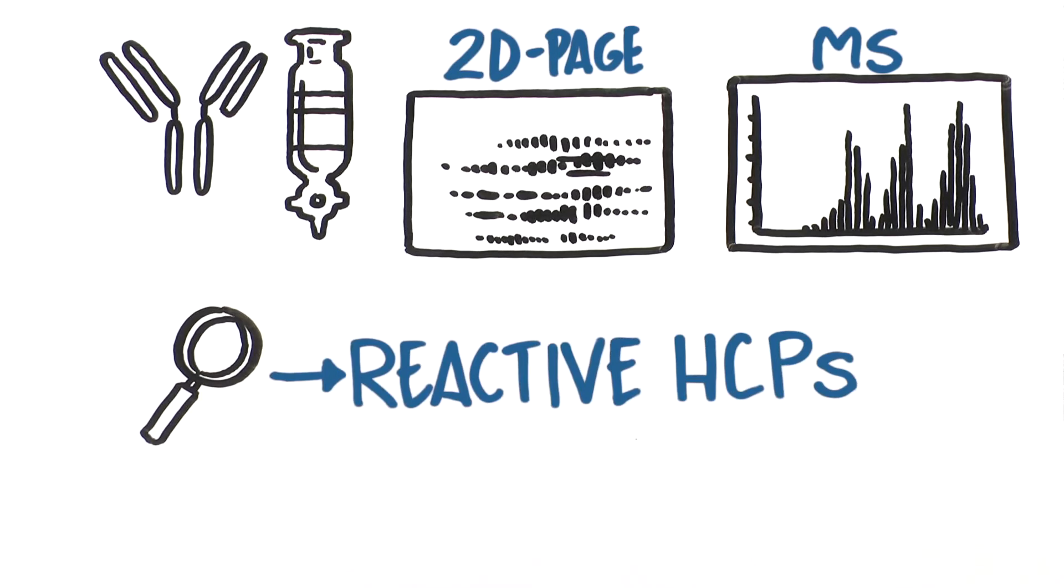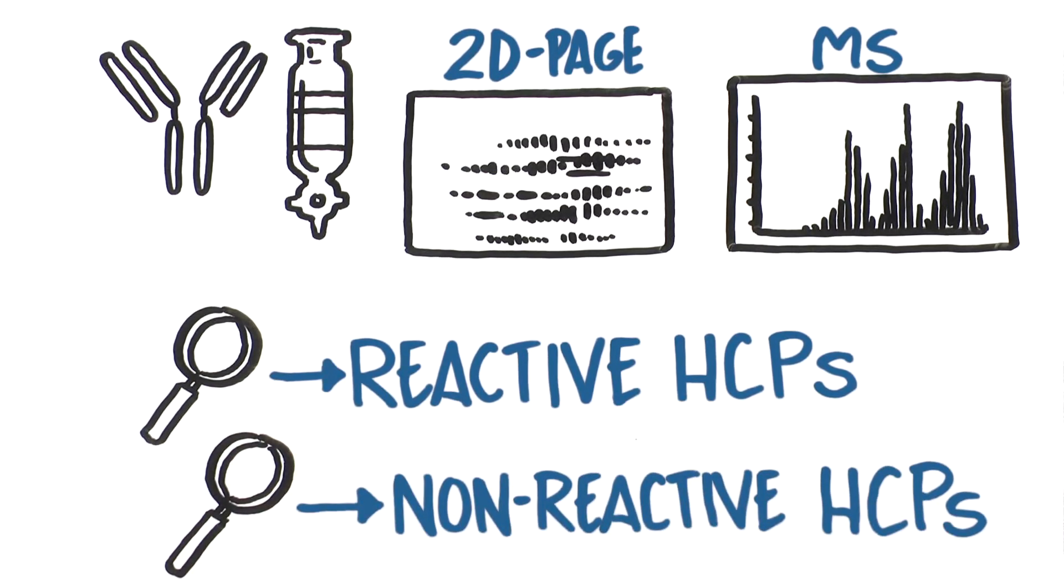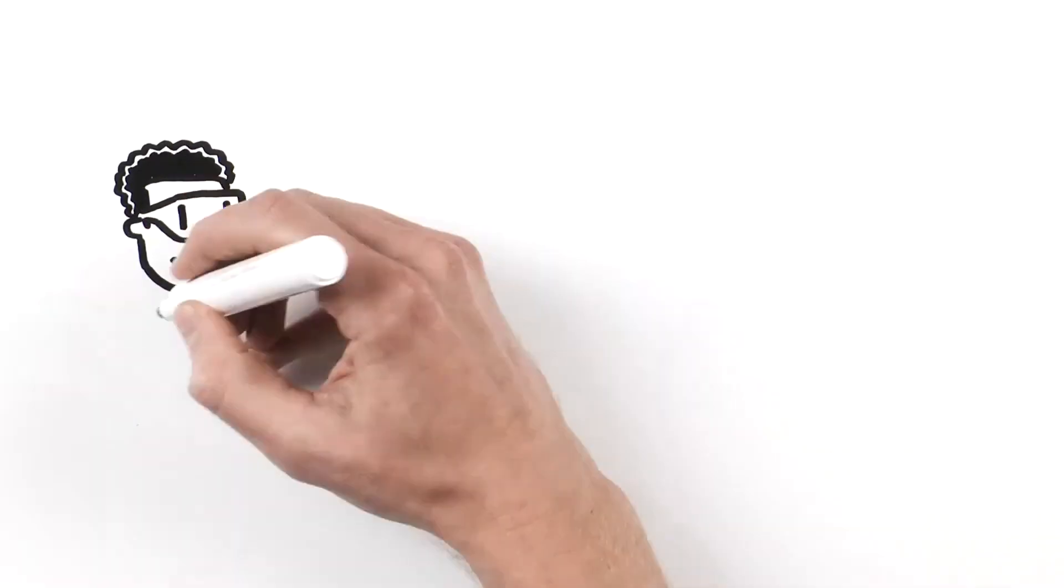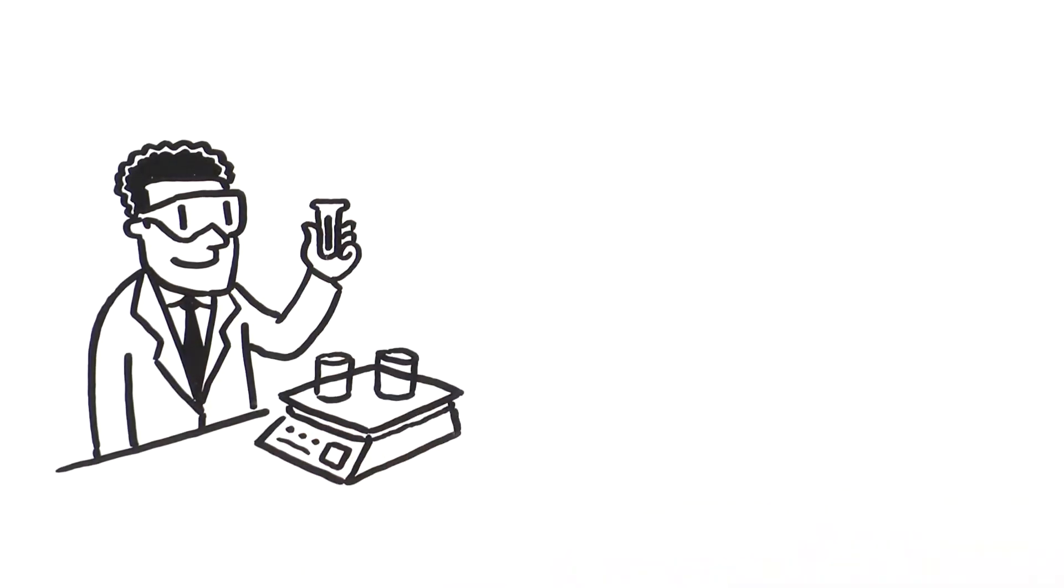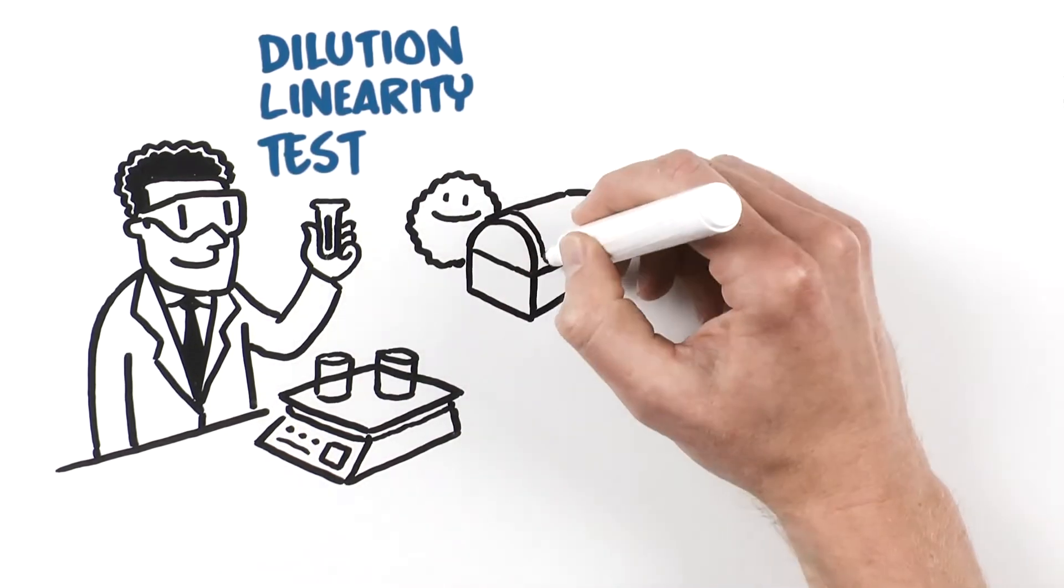If 2DE does determine adequate coverage, perform a dilution linearity test. If the assay has poor dilution linearity, look for individual HCPs that might have been enriched during the purification process.